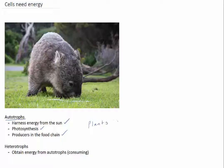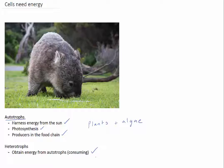Other organisms, like us or this adorable wombat, rely on autotrophs to provide their energy for them, usually by consuming them — like this wombat eating the grass. These organisms that rely on energy by eating autotrophs are called heterotrophs.